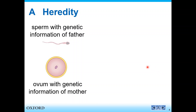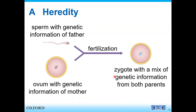So how are traits passed from your mother and father to you? Remember fertilization and the sperm — they carry half the DNA of your father, passing half of your father's traits to you. And the ovum carries the genetic information of the mother, the other half. So after fertilization, the zygote has mixed genetic information from both parents.